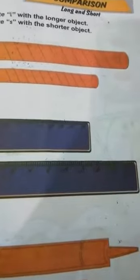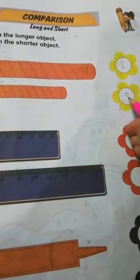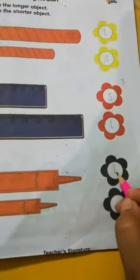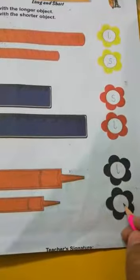Long object में हम कौन सा alphabet write करेंगे? L. Short में S, long में L. Practice आपने करनी है, इसकी घर में.